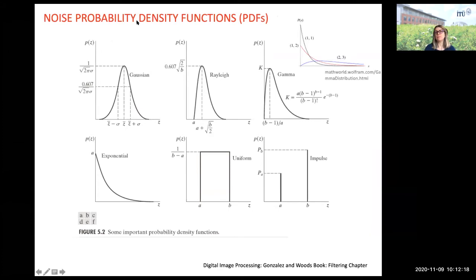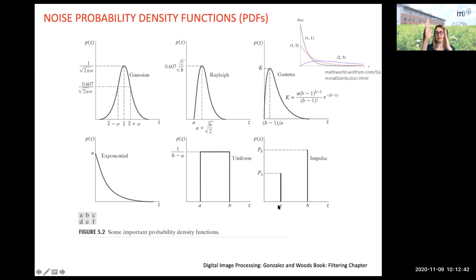Let's look at some probability density functions used to model noise. It could be completely random — that's a uniform PDF. We will see impulsive type — a Delta PDF — which has two discrete point masses. This is a PMF, a probability mass function. Most common is Gaussian. There is also Rayleigh, used in communication channels, exponential, and Gamma distribution, which is a more general form of many distributions.